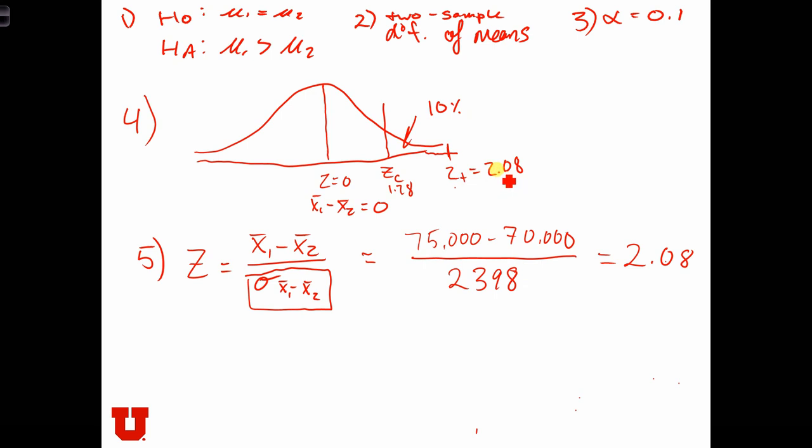Since the test statistic is in the zone of rejection, we have to reject the null hypothesis. So we reject the null that the income levels are equal, and it's more likely that Park City residents are wealthier than Salt Lake City residents.